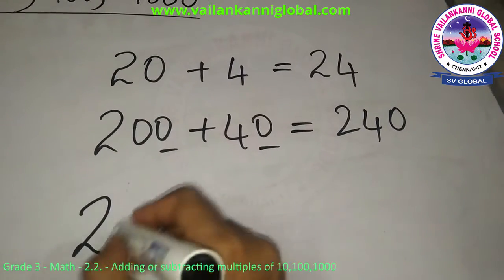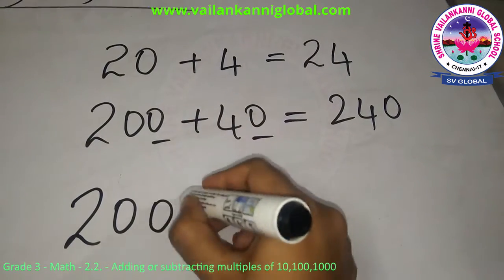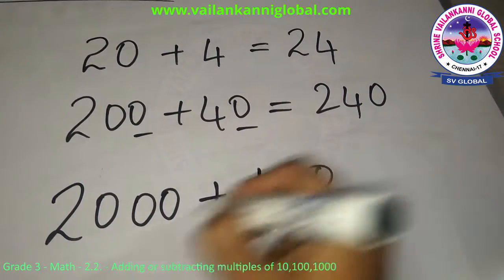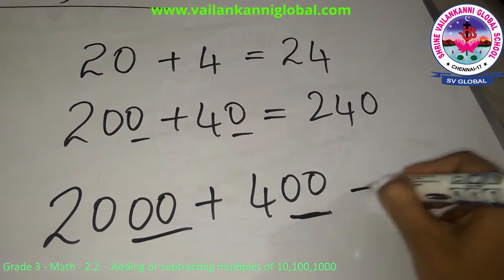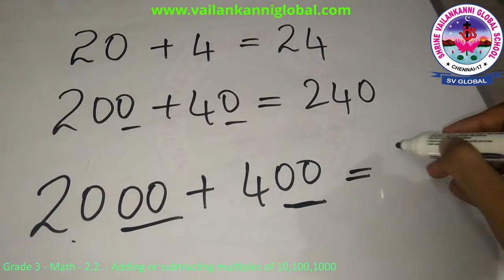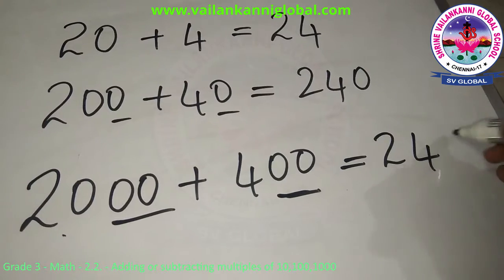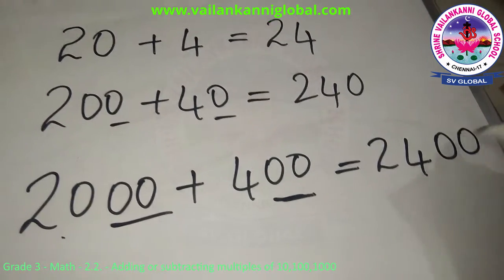So when you add another 0 which is 2000 plus 400, just add these two zeros towards the last. So 20 plus 4 is 24 and add those two zeros in the last.